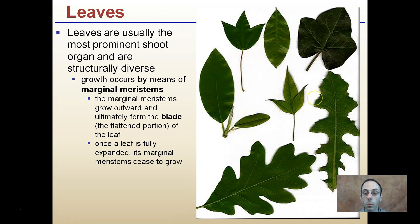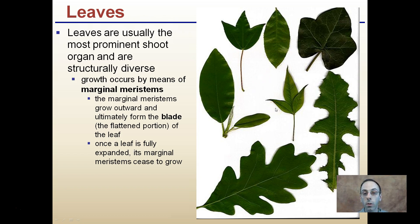As an important note: while we think of leaves always producing energy, when a leaf is very small and first expanding, it may actually be a sink — it may consume more energy than it provides. At maturity, leaves will definitely produce more than they ever took initially. That small leaf might be more of a sink than a source until it gets fully mature and reaches maximum efficiency.